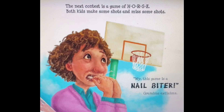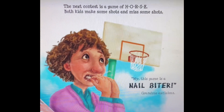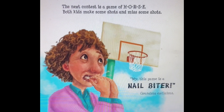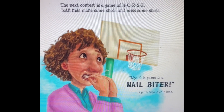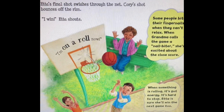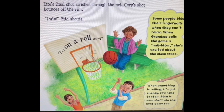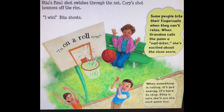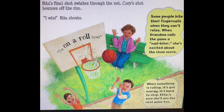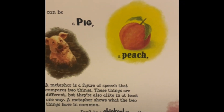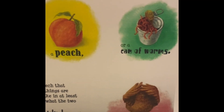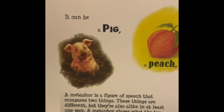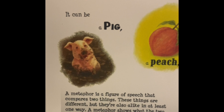Skipping ahead to another page — the next contest is a game of horse. Both kids make some shots and miss some shots. 'My, this game is a nail biter!' Grandma exclaims. Etta's final shot swishes through the net; Cory's shot bounces off the rim. 'I win!' Etta shouts. 'I'm on a roll!' Some people bite their fingernails when they can't relax — when Grandma calls the game a nail biter, she's excited about the close score. The book also starts to introduce our next figure of speech — an idiom — and we'll see that idioms are also like metaphors.